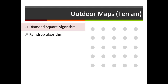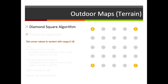Now let's look at outdoor maps. There are many algorithms but we'll look at two: the diamond square algorithm, and the raindrop algorithm which improves terrain maps. Terrain maps are different in that we're not carving out spaces — we're producing a surface that represents hills, valleys, and ridges. Diamond square is one of the most popular techniques: you start by setting the corner values of a grid to random values within a particular range — here one to eight — and these numbers represent the height at that position of the map.